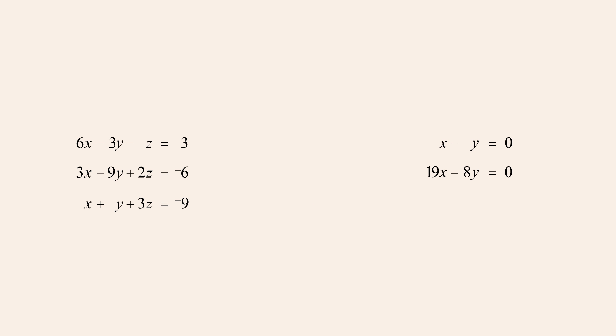We now have a system of two equations and two variables which can be solved to find the values of x and y. Once again, we will use the elimination method and multiply the top equation by negative eight in order to eliminate the y terms.